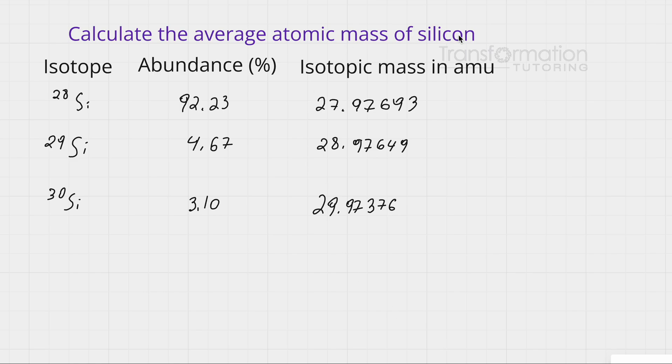Calculate the average atomic mass of silicon. Here we are given three isotopes of silicon with their abundances. Isotopes are atoms of the same element that have a different mass. As you can see, the isotopic mass is given here.